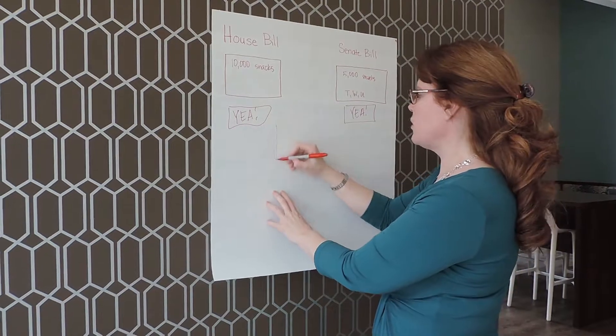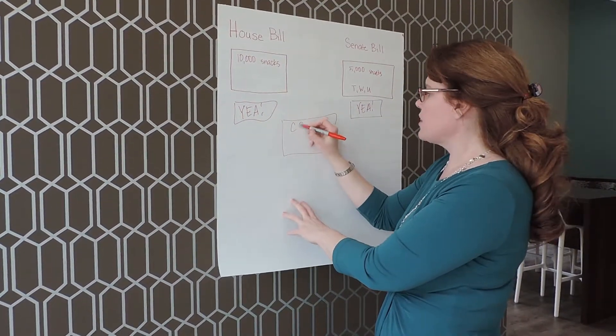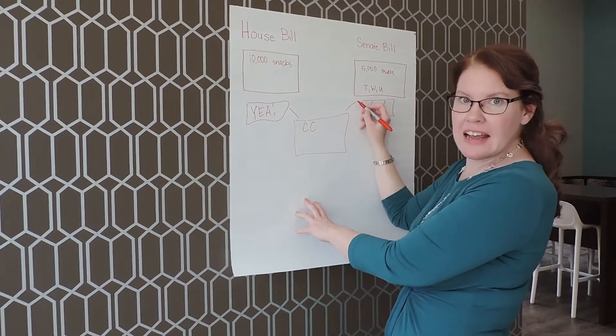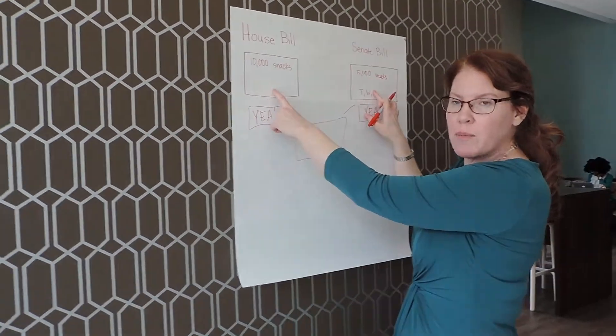So what happens is you put together a conference committee. Conference committee has members from the House, it has members from the Senate, and it takes the differences between the two bills and it works out a compromise.